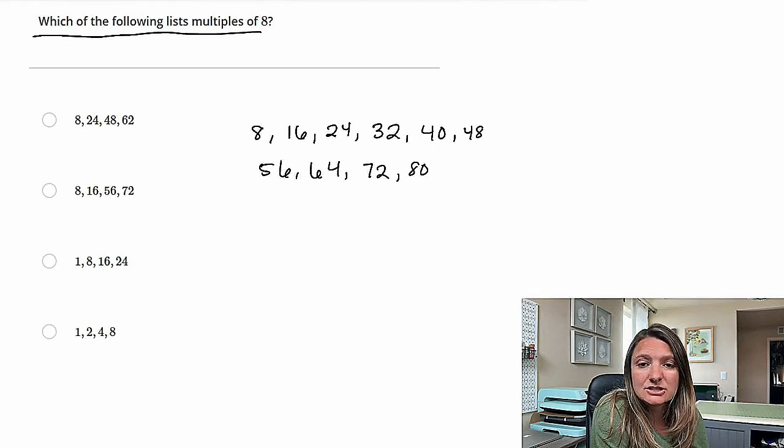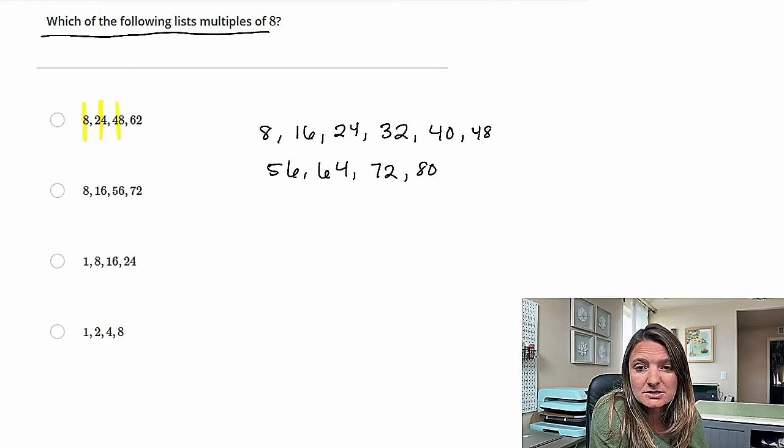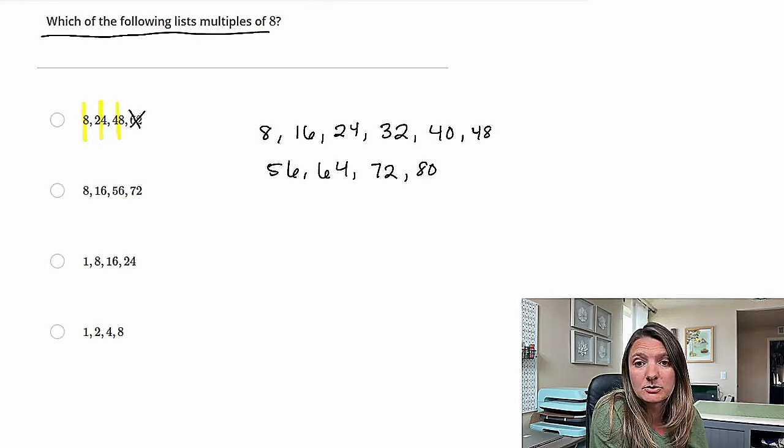So the first one, eight matches, 24 matches, 48 matches, but 62 is not a multiple of eight. So A is not the answer.